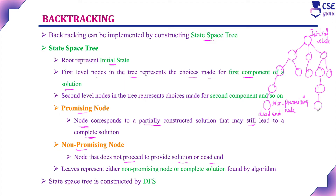If a level provides a solution, those nodes are considered promising nodes. A non-promising node is a node that does not proceed to provide a solution or has reached a dead end. The leaf nodes can be either non-promising — if it reached a dead end — or they represent a node with a complete solution. So there are two types of leaf nodes: either a non-promising node or a node that provides a complete solution.